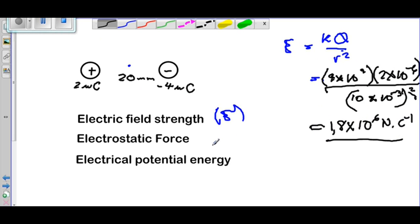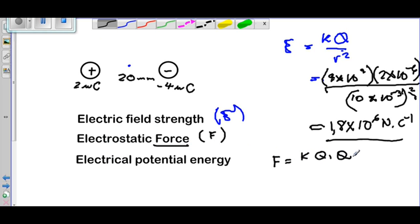For the second problem, if we have to work out the electrostatic force, the word 'force' tells us we need to find F using Coulomb's Law: F = kQ1Q2 / r². Here, k = 9 × 10⁹, Q1 = 2 × 10⁻⁶, Q2 = 4 × 10⁻⁶ (we don't put the sign in here), and r = 20 millimeters converted to meters, all squared.